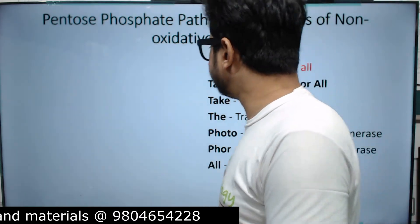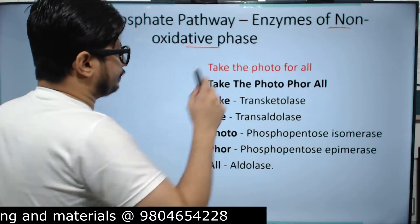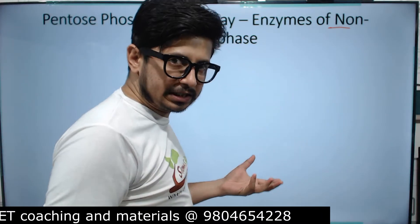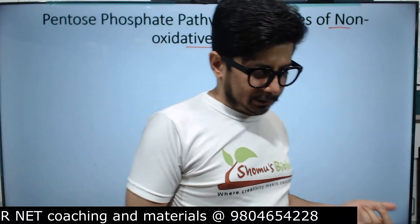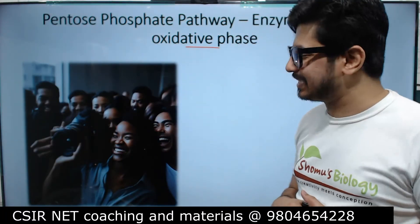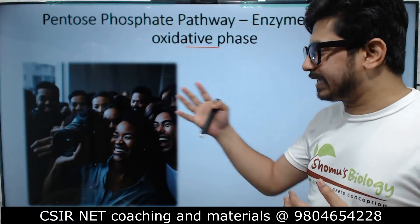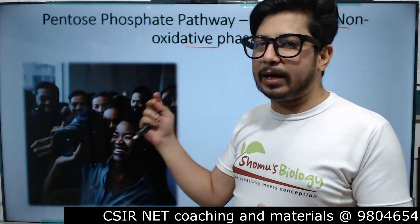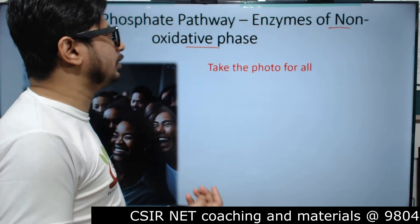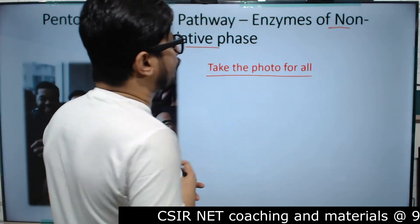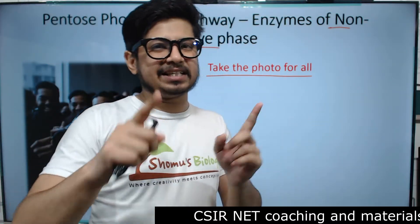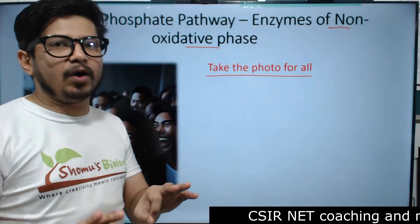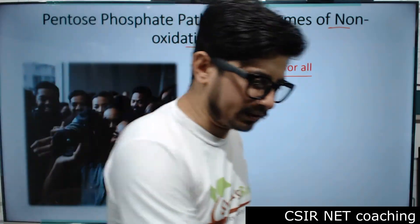Now we move on to the enzymes involved in the non-oxidative phase of the pentose phosphate pathway. For this, look at the image where a person is taking a photo of a group of people. What you need to remember is: 'Take the photo for all.' If you remember this sentence, you can easily write down the names of all enzymes involved in the non-oxidative phase.